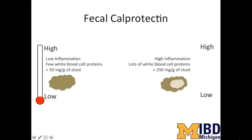For patients with IBD, the fecal calprotectin is a bit like a thermometer for inflammation. When the calprotectin is high, inflammation is active, and when the calprotectin is low, inflammation is well controlled.